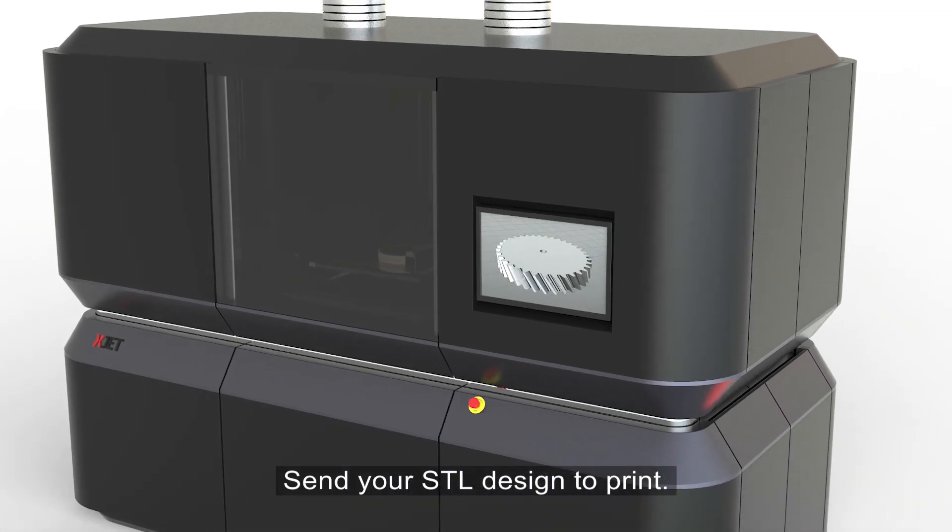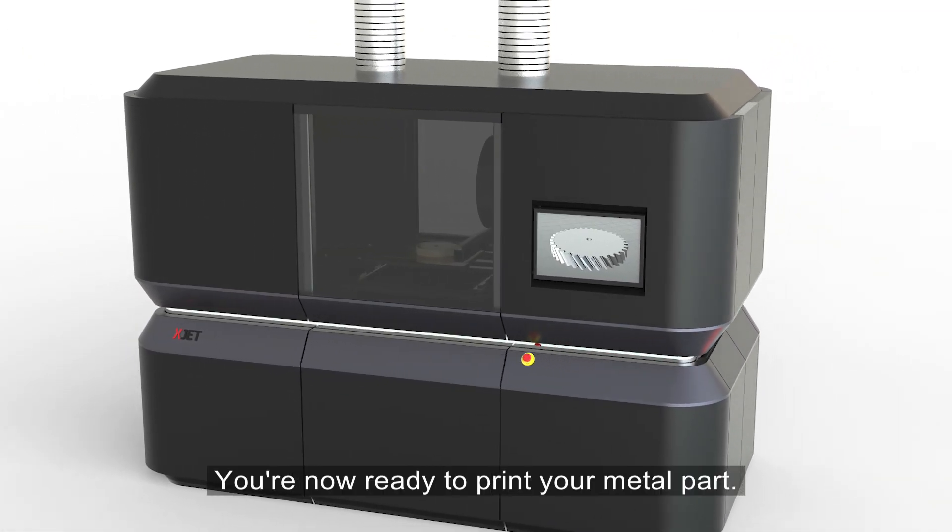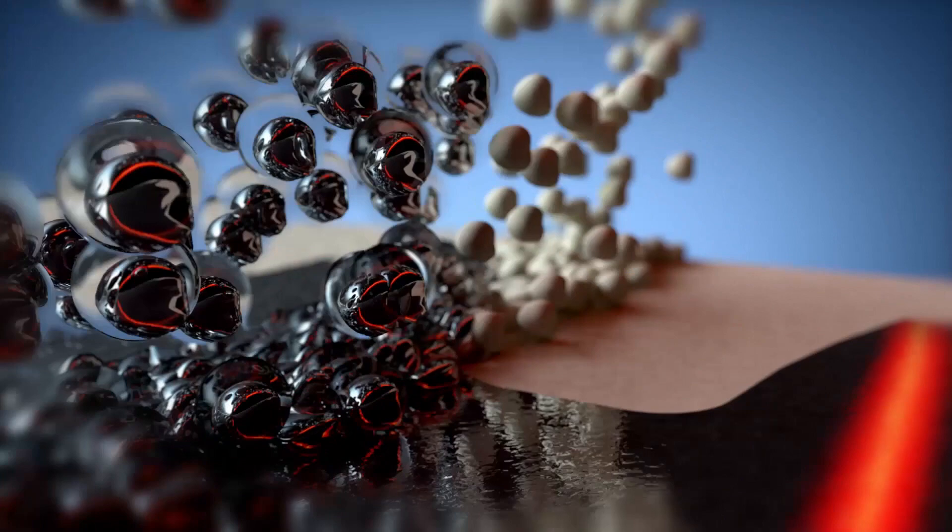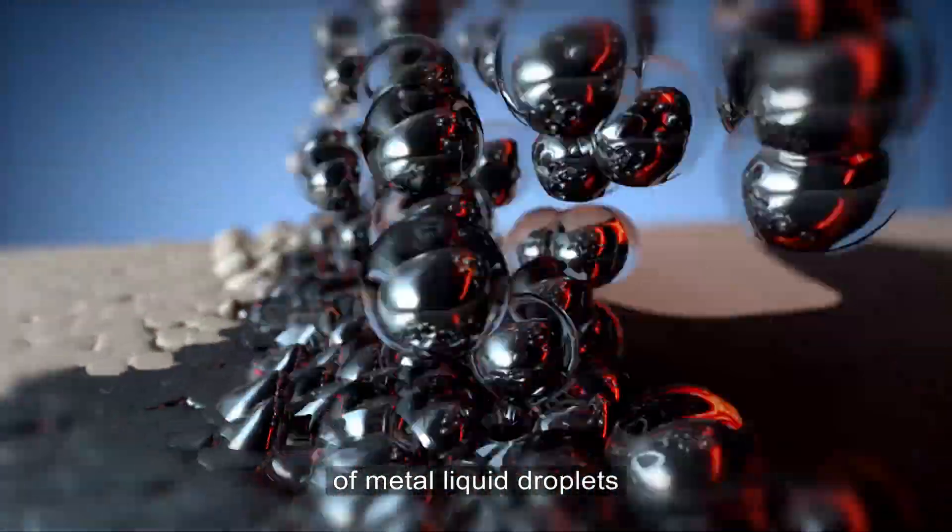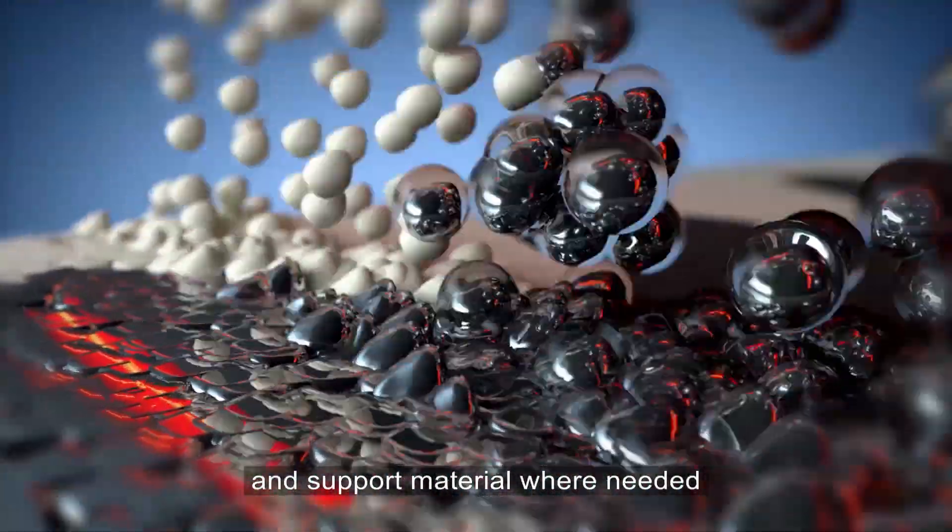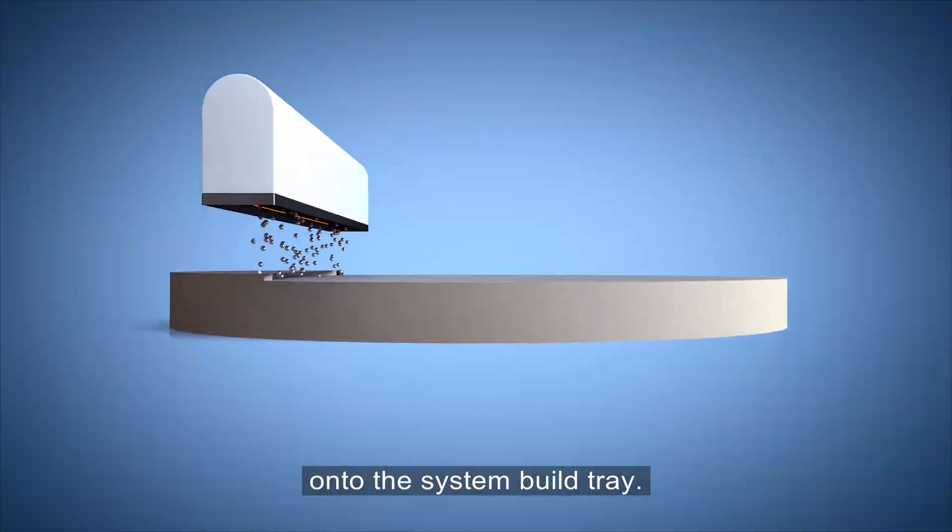Send your STL design to print. You're now ready to print your metal part. The print head deposits a fine layer of metal liquid droplets and support material where needed onto the system build tray.